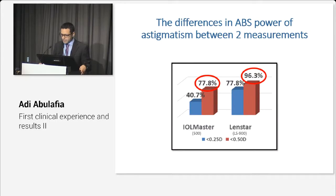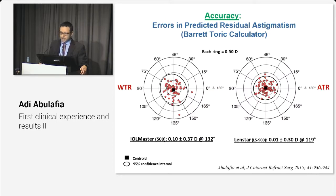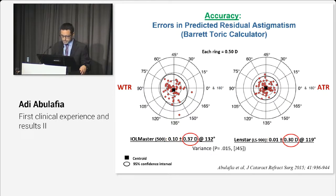The differences between the two measurements were below 0.5 diopters in more than 96% of eyes using the LENSTAR, as opposed to only 78% with the IOL Master. Looking at accuracy, here are the errors in predicted residual astigmatism following toric IOL implantation, and the LENSTAR had a significantly lower centroid prediction errors and variance as compared to the IOL Master.